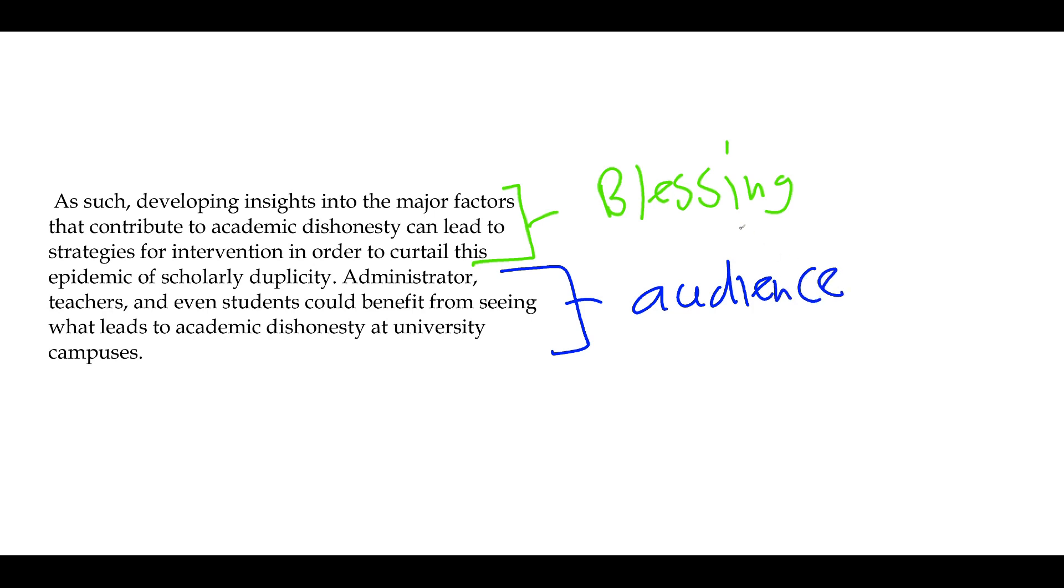So let me go ahead and read this to you: 'As such, developing insights into the major factors' - so developing insights, this is the blessing - 'into the major factors that contribute to academic dishonesty can lead to strategies' - here is another blessing - 'for intervention in order to curtail this epidemic of scholarly duplicity.' Next sentence: 'Administrators, teachers, and even students could benefit from seeing what leads to academic dishonesty at university campuses.' So here I clearly lay out the benefit: insights, strategies, reducing academic dishonesty.